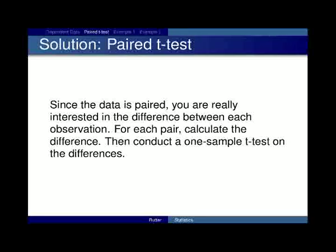And so, the solution to this is what's called the paired t-test. Where you're really interested in the difference between each observation. Not the two sets of data like we would in a two-sample t-test. But we want to look at the difference. So, for each pair, we calculate the difference. And then we conduct a one-sample t-test on the differences as opposed to using the two-sample t-test formula.